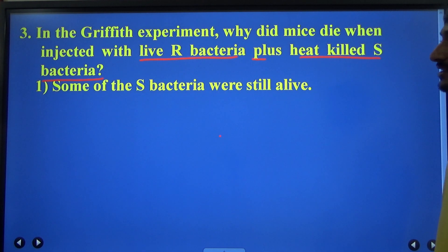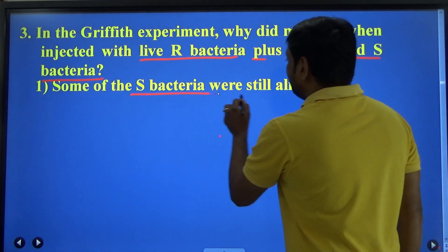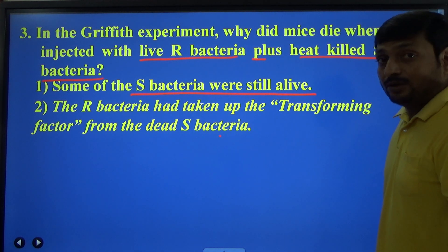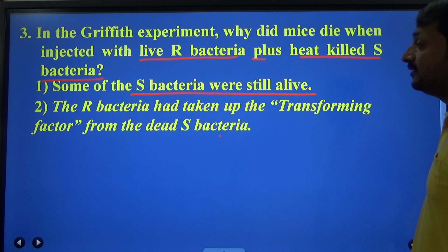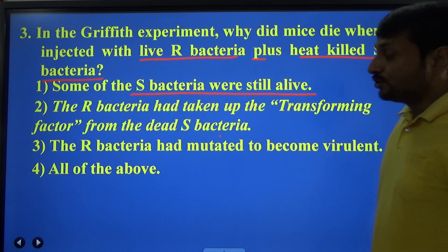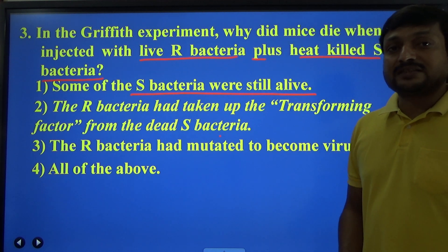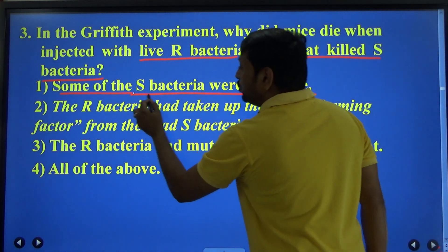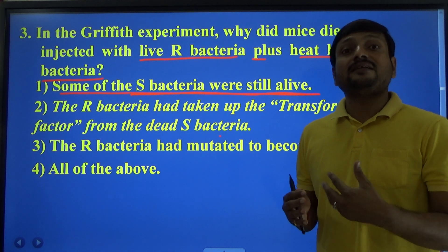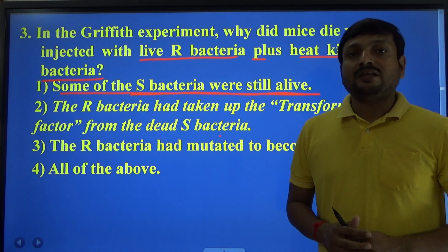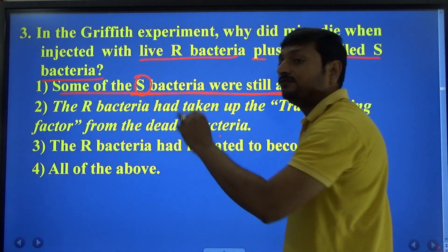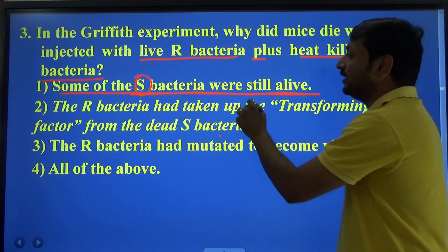Option one: some of the S bacteria were still alive. Option two: the R bacteria had taken up the transforming factor or principle from the dead smooth bacteria. Option three: the R bacteria had mutated to become virulent. Option four: all of the above. Option one cannot be correct because when heat-killed smooth strain was injected into mouse, the mouse did not die — so some smooth bacteria being alive is ruled out.